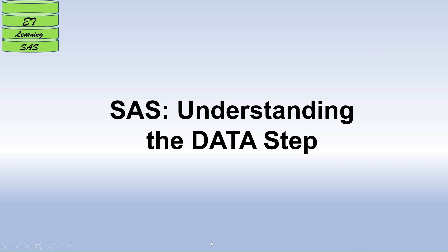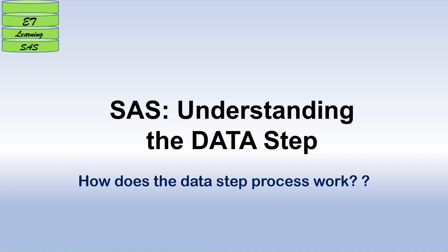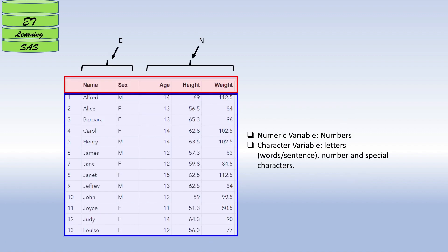Today I'm going to explain data step processing in SAS. In general, any dataset has variables and values. Variables marked in red are the variable names, and below them are the values. Variables can be numeric or character. For example, age, height, and weight are numeric variables, while name and sex are character variables. Character variables can be a letter, word, sentence, number, or special character.